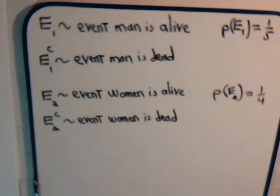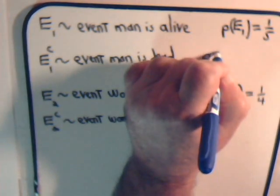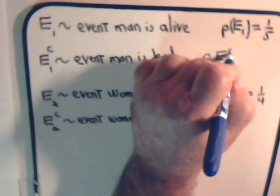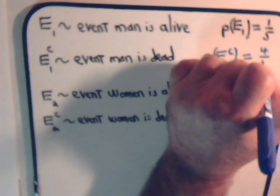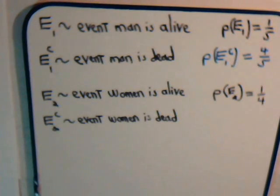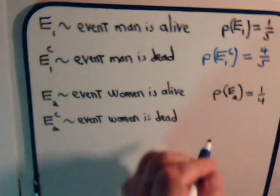E1c is the complementary event — the man is dead. The probability of E1c is one minus one-fifth, which equals four-fifths. E2 will be the event that the woman is alive after 20 years, and the probability of that happening is one-fourth. The complementary event E2c would be that the woman is dead, and the probability of that happening is three-fourths.